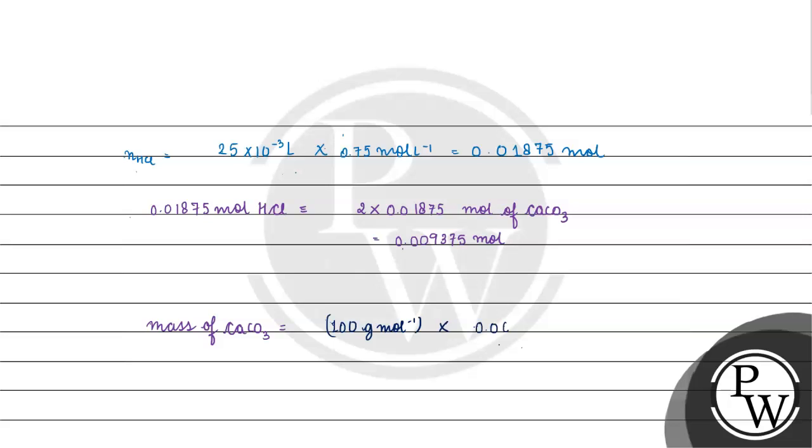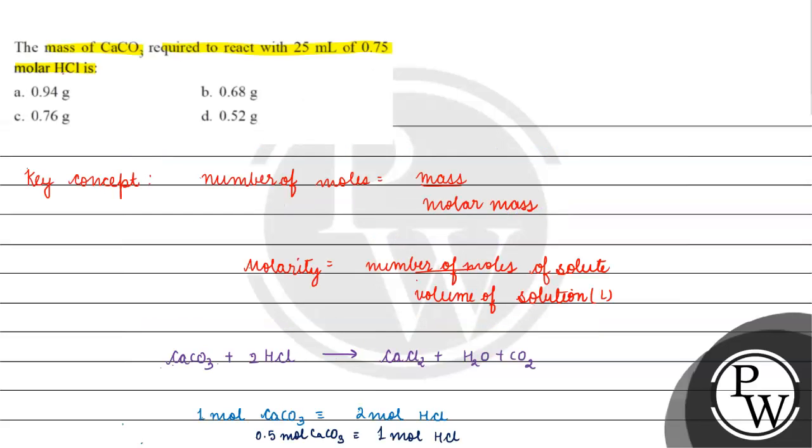How much will it be? It will be 0.9375 gram, which can be approximately written as 0.94 gram. Coming back to the question, correct answer for this question will be option A. I hope you understood it well. Thank you and all the best.